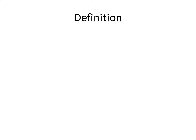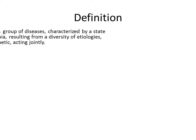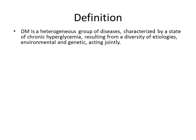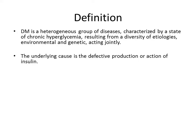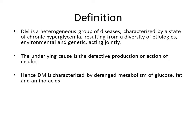Definition of diabetes mellitus: it is a heterogeneous group of diseases, all characterized by a state of chronic hyperglycemia, which can result from diversity of etiologies, both environmental and genetic. The underlying cause is defective amount or action of insulin, because insulin controls the metabolism of glucose, fat and amino acids. Diabetes mellitus is characterized by a deranged metabolism of these three.